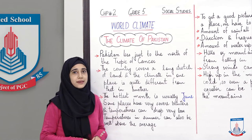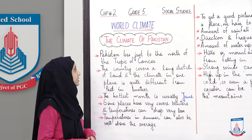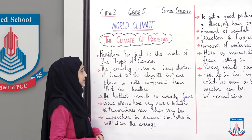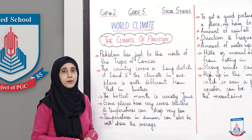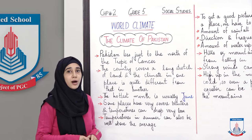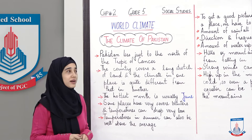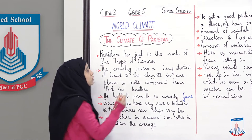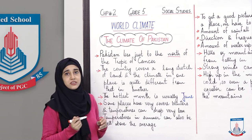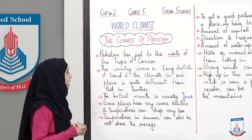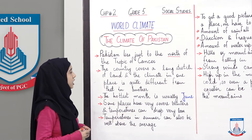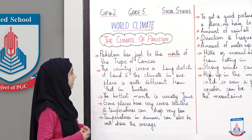Let's talk about the climate of Pakistan. Pakistan lies just to the north of the Tropic of Cancer. In your book, there is a map drawn on the Tropic of Cancer so you can see that exact location. Pakistan lies just to the north of the Tropic of Cancer. The country covers a large stretch of land and the climate in one place is quite different from that in another.